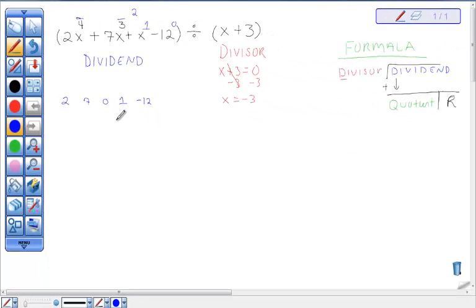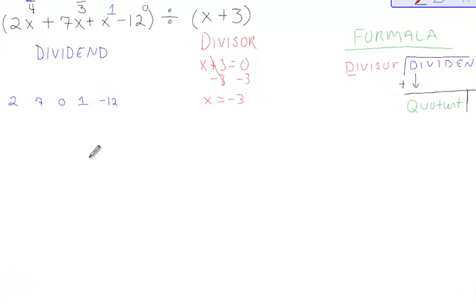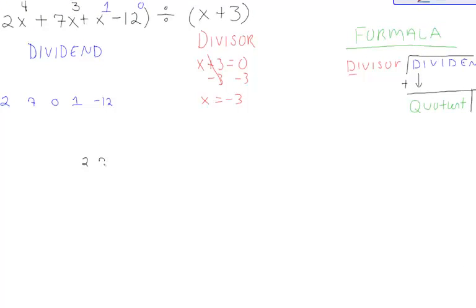Now that we got this information, we're going to plug in both our divisor and our new dividend into our formula. I'm going to start with my dividend which is 2, 7, 0, 1, negative 12 divided by my divisor which is negative 3.